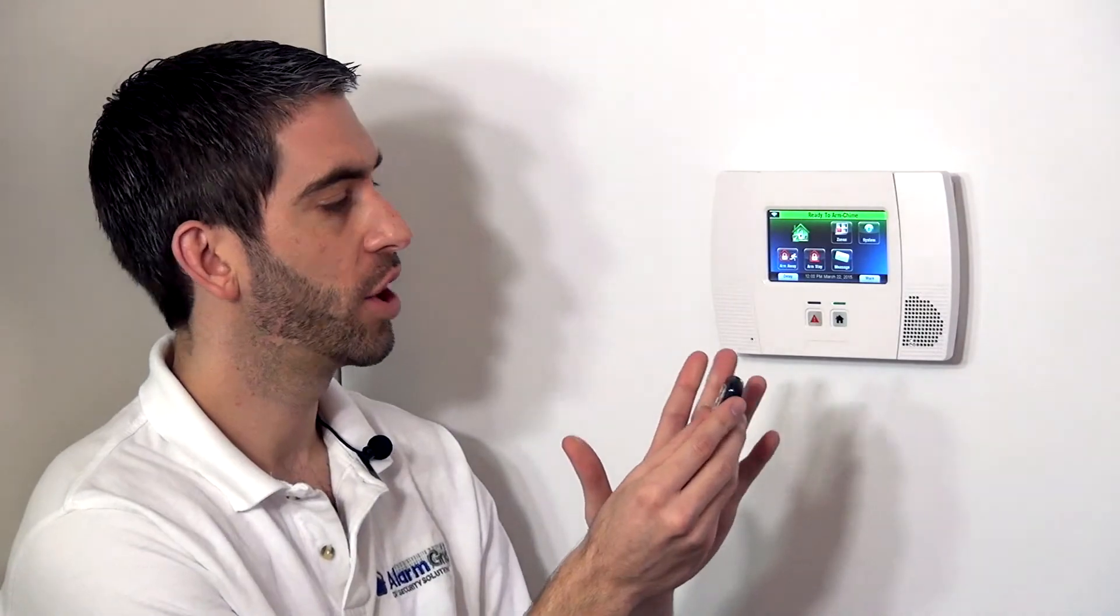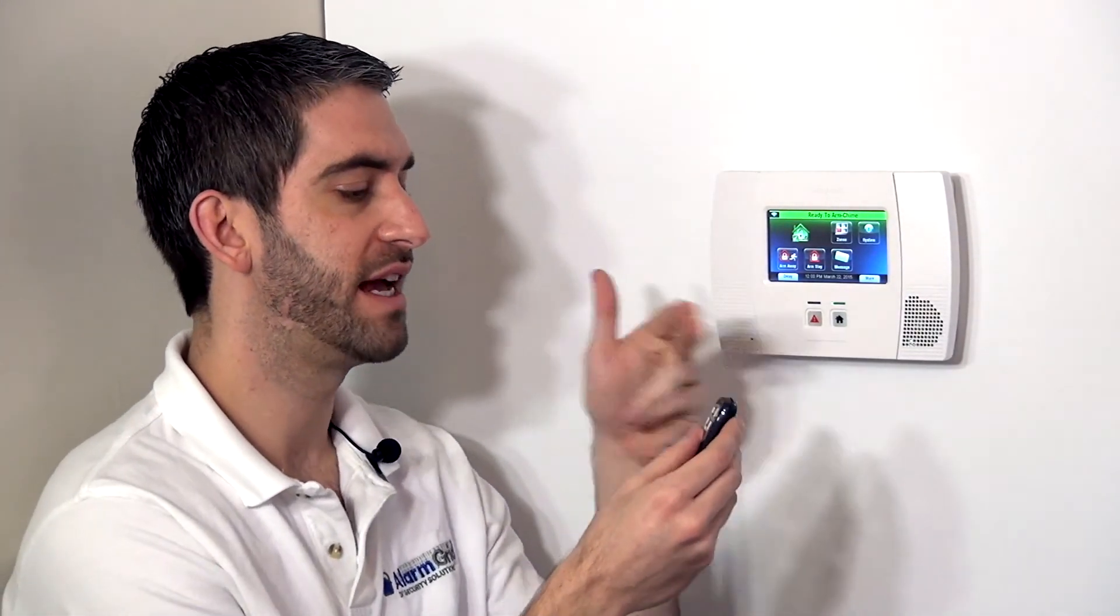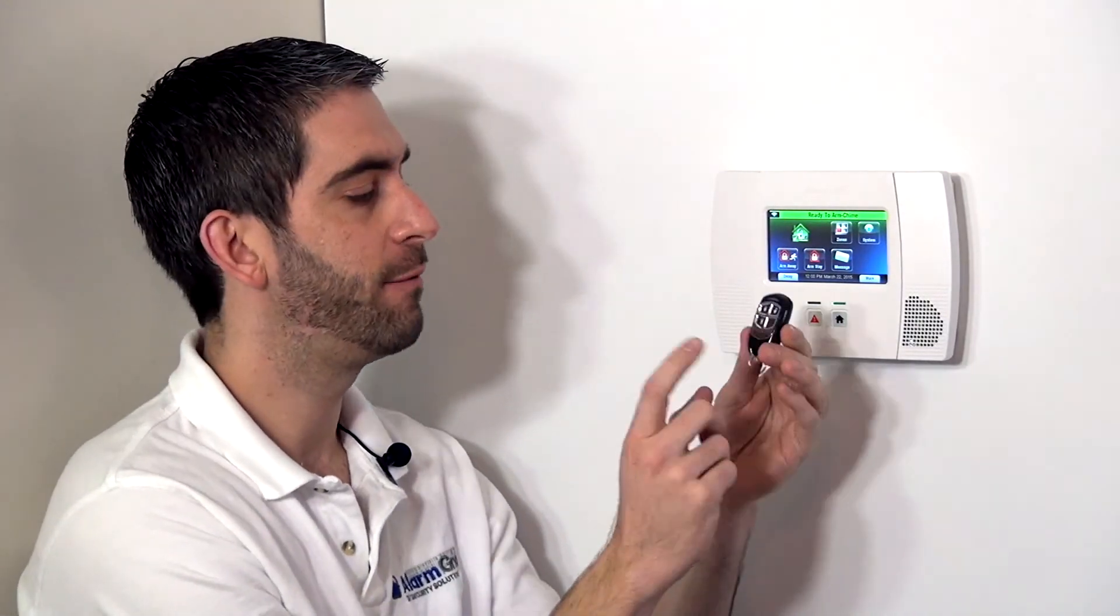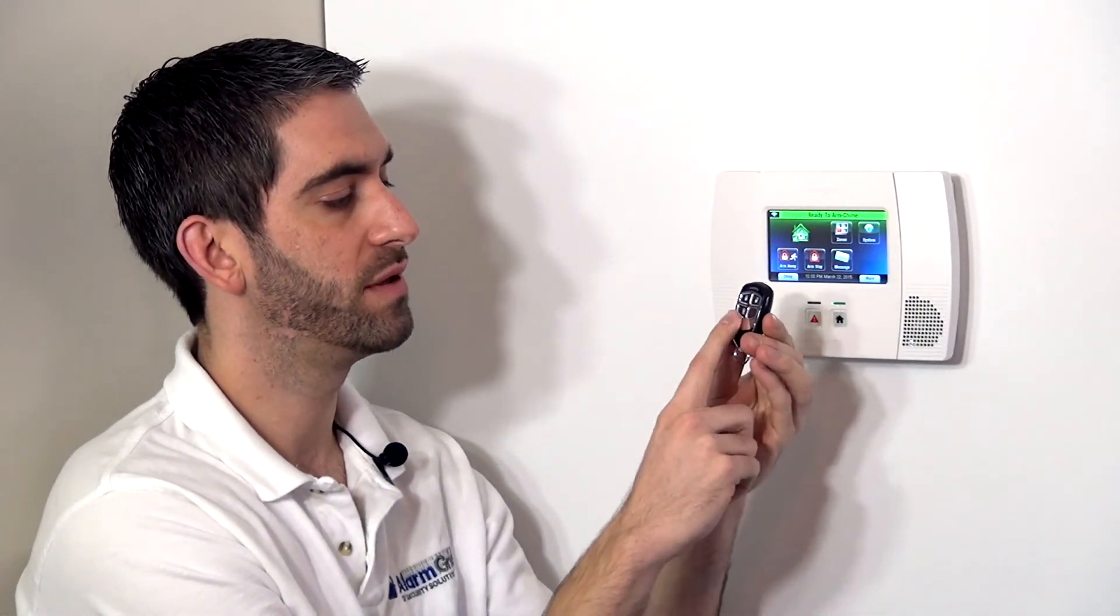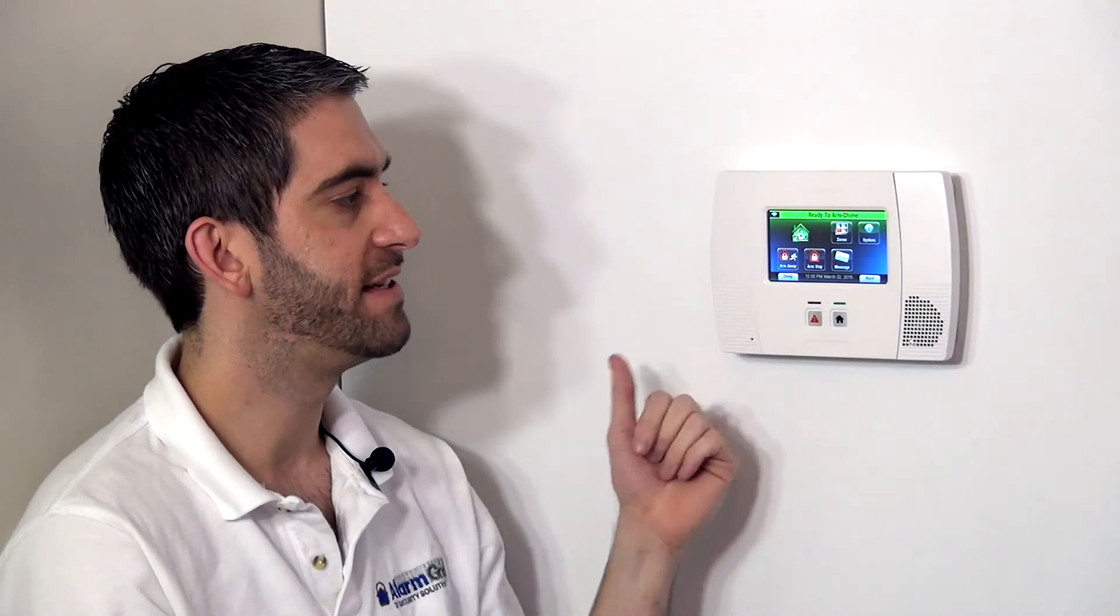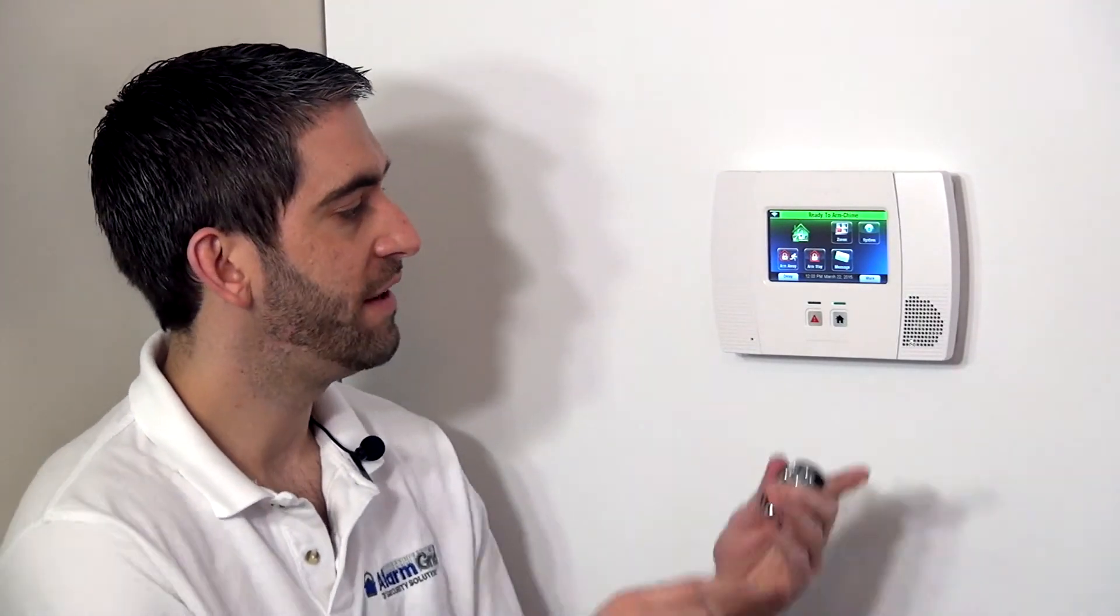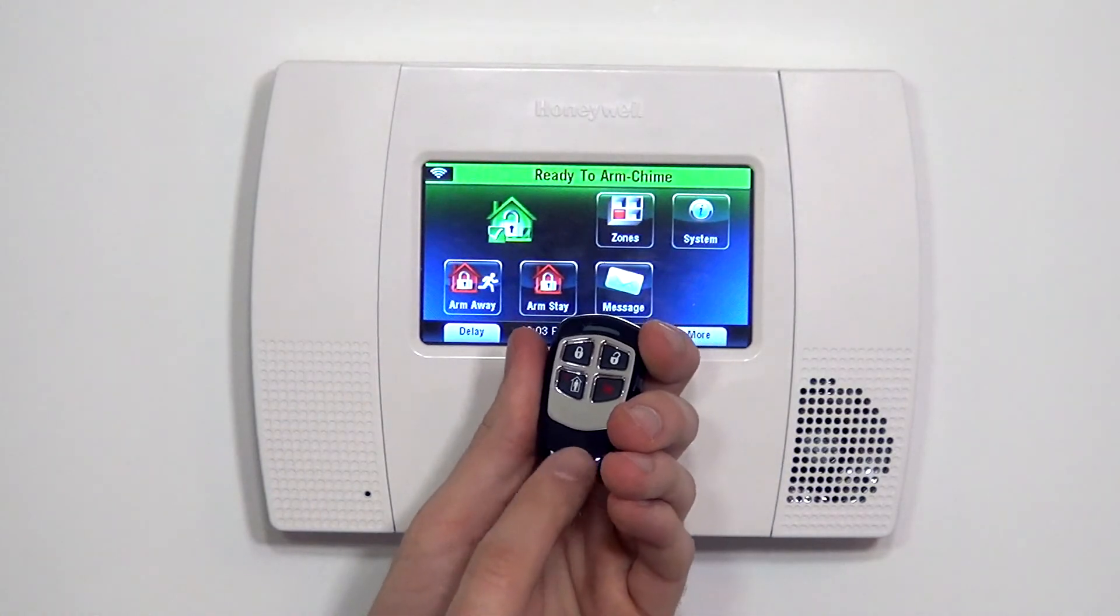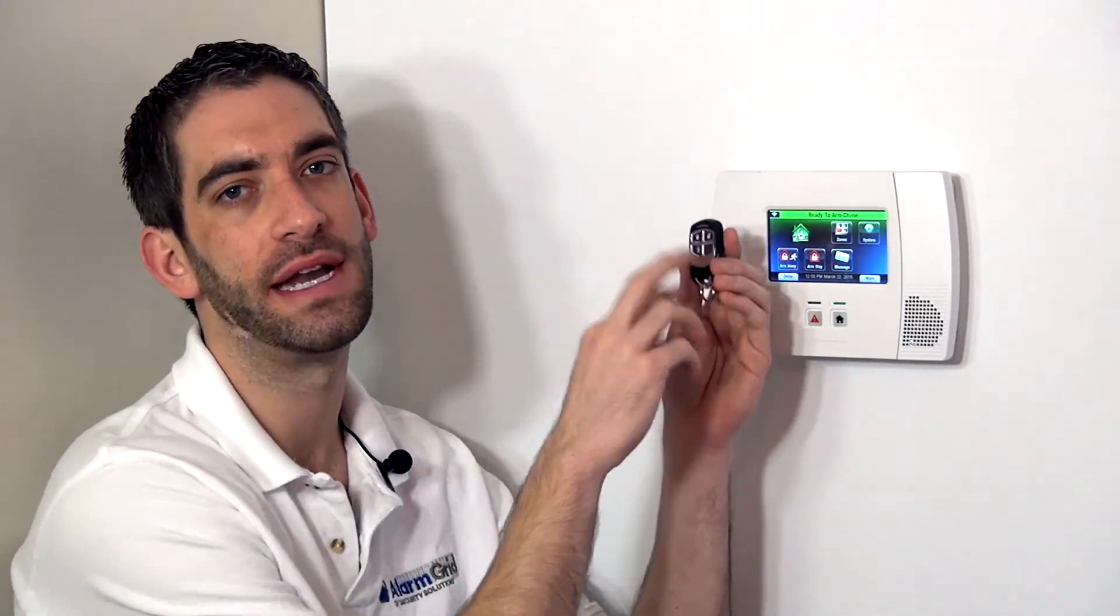Where instead of sending the same sequence of code from here to here, it actually resets and does a rolling code every time. So that if anyone ever somehow spoofed or got the code from your key fob, they could not come in and disarm the system without you knowing about it. So the high security mode, we talked about that in the 5834-4EN programming video for the L7000 panel. And we're going to do another video that goes in more depth about why you would do high security mode and how to take it from high security to standard mode.